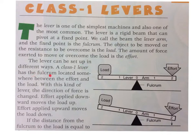A Class 1 lever has the fulcrum located somewhere between the effort and the load. With this kind of lever, the direction of force is changed. Effort applied downward moves the load up. Effort applied upwards moves the load down.